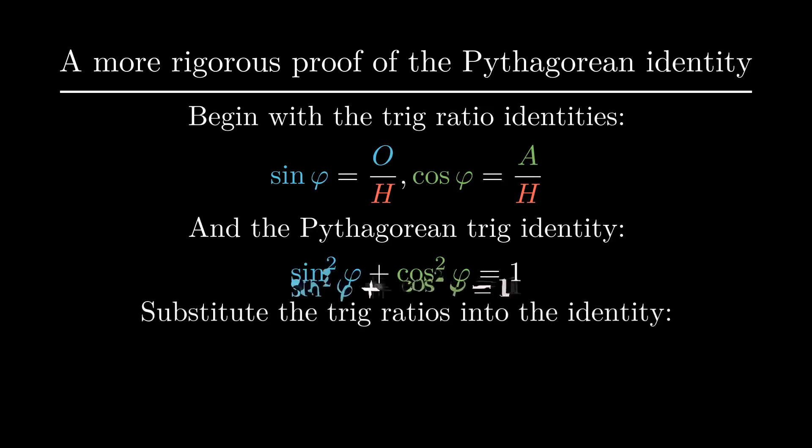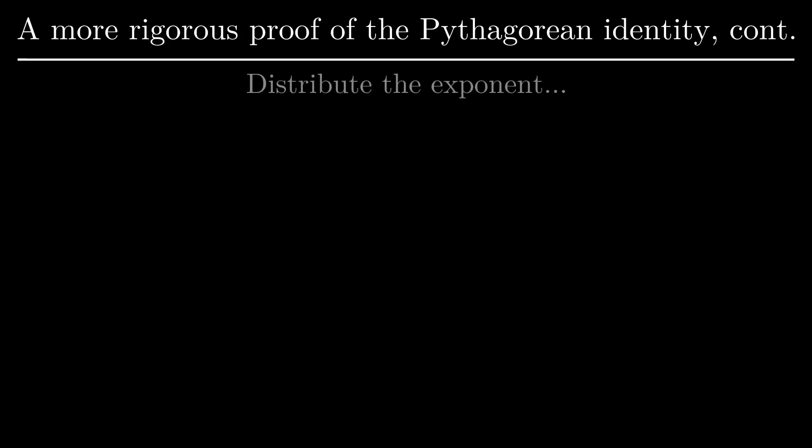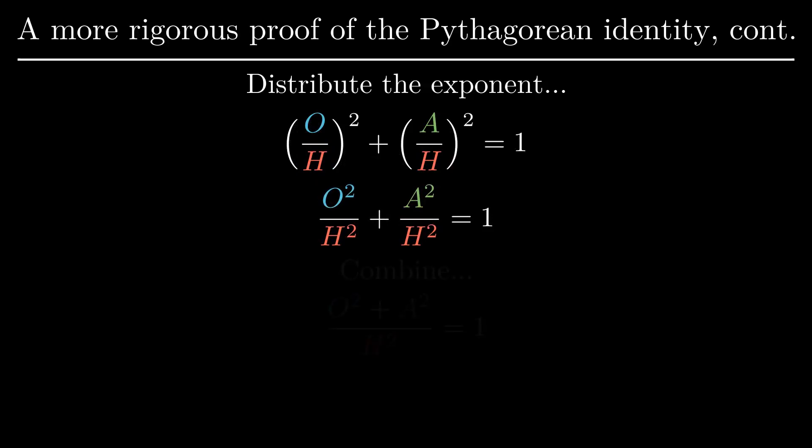We'll substitute our ratios into our identity. Next, since both fractions are squared, we distribute the square, then add these two fractions since they have a common denominator.